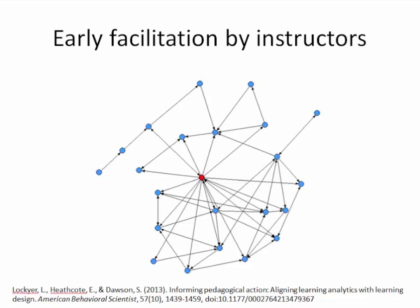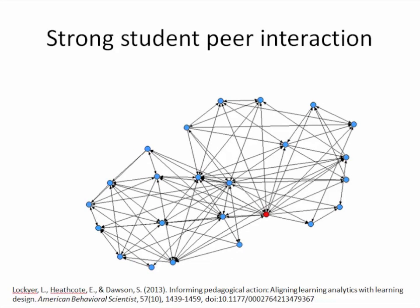That is to say, the instructor aims to participate in most of the interactions and exchanges that may happen in an online discussion forum. However, as discussions develop, the role of the instructor should be more like any other node in the network, and students themselves should start shaping their interactions with their peers. We can see the change in network configuration, which indicates that the instructor is just yet another node in the network and the rest of the students now occupy equally important positions in the network.